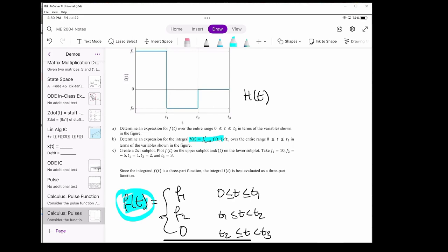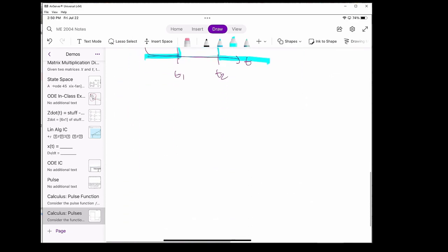We see that f of t is a three-part function, so it's probably best if we split the integral into three separate integrals, one for each region. Let's start with the first region, which is from 0 to t1.